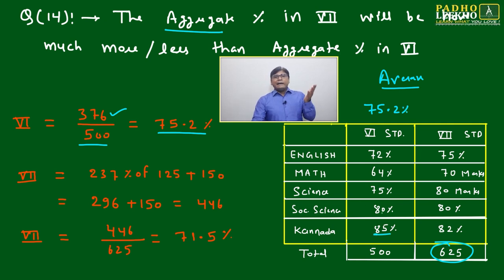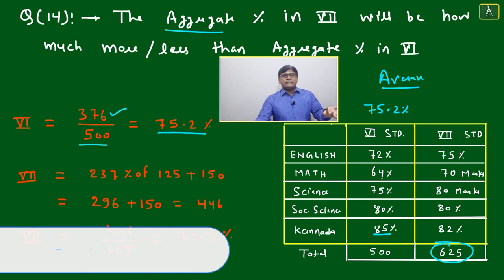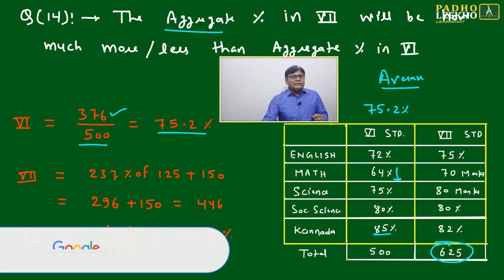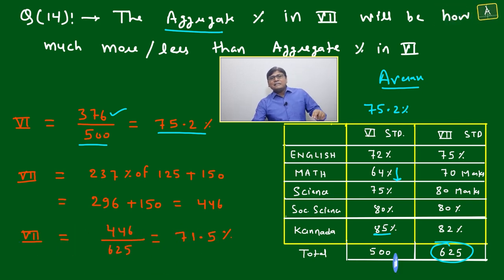Individually you're getting 85 percent in Kannada, 80 in social science, but in subjects like math it's less. Overall it's 75.2 percent. Now in seventh, some data is given as percentage and some as marks, so we have to apply both techniques.